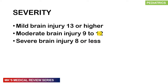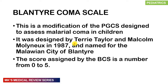The Blantyre Coma Scale is a modified version of the Pediatric Glasgow Coma Scale, designed to assess the level of consciousness in malarial patients. It was designed by Terry and Malcolm in 1987 and named after the city of Blantyre in Malawi. Scores range from a minimum of 0 to a maximum of 5.